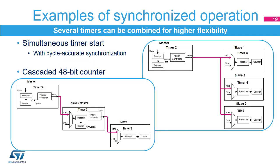This slide gives two examples of synchronized operation. The first example shows how four timers can be simultaneously started. A mechanism allows the master timer to start slightly delayed to compensate for the master-slave link delay and have all timers synchronized with cycle accuracy. By combining the channels of timers 2, 3, 4, and 9, it is possible to have up to 14 synchronized PWM channels.